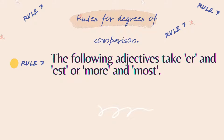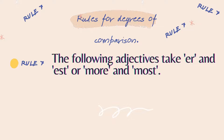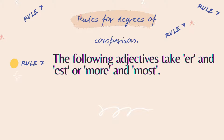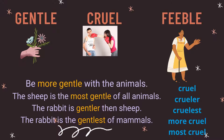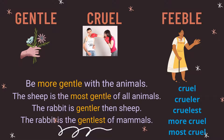Rule number 7: the following adjectives will take both 'er'/'est' and 'more'/'most' — all forms are correct. First examples: gentle, cruel, and feeble. For 'gentle', you can say more gentle, most gentle, or gentler, gentlest. For 'cruel', you can say crueler, cruelest, or more cruel, most cruel.